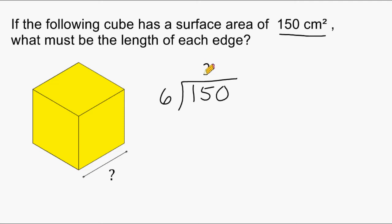So if we take 150 and divide it by 6, we could figure that each side must have an area of 25 square centimeters.